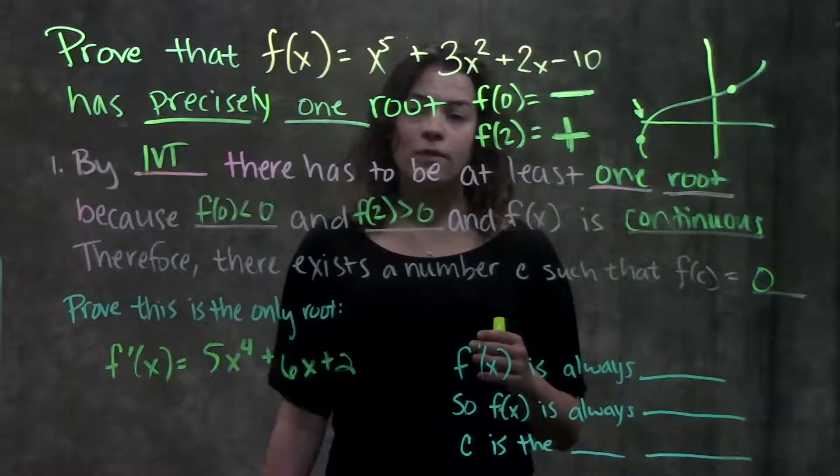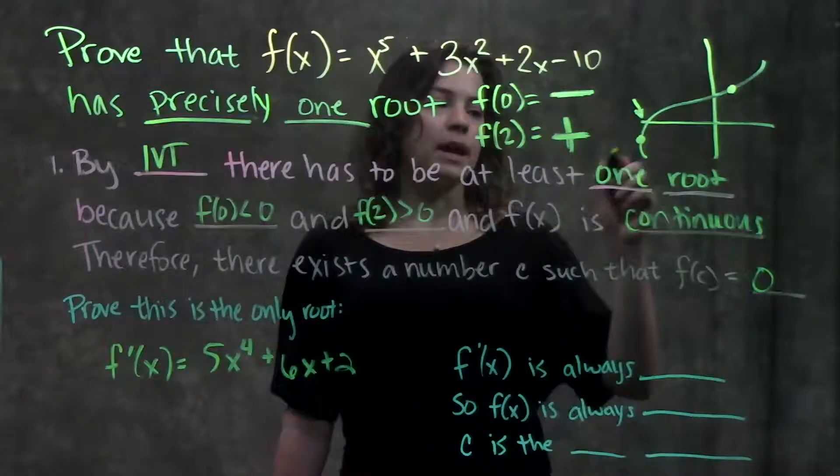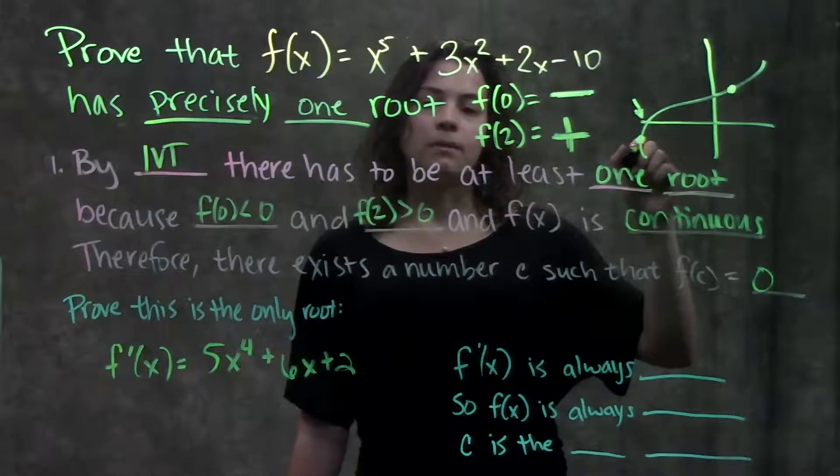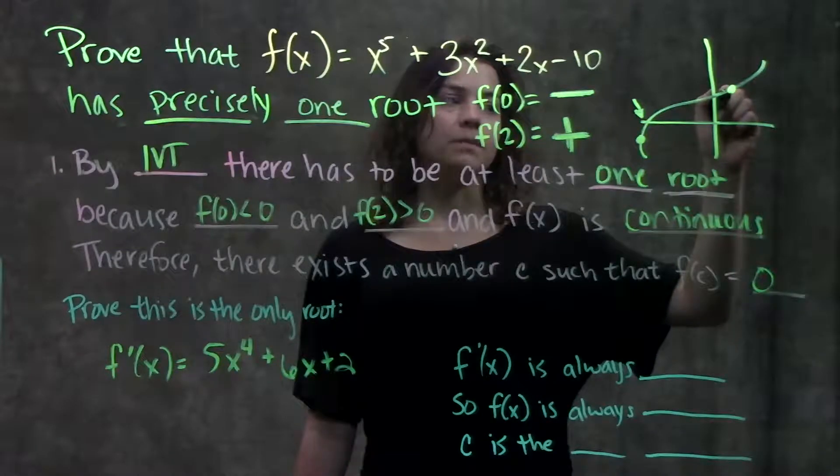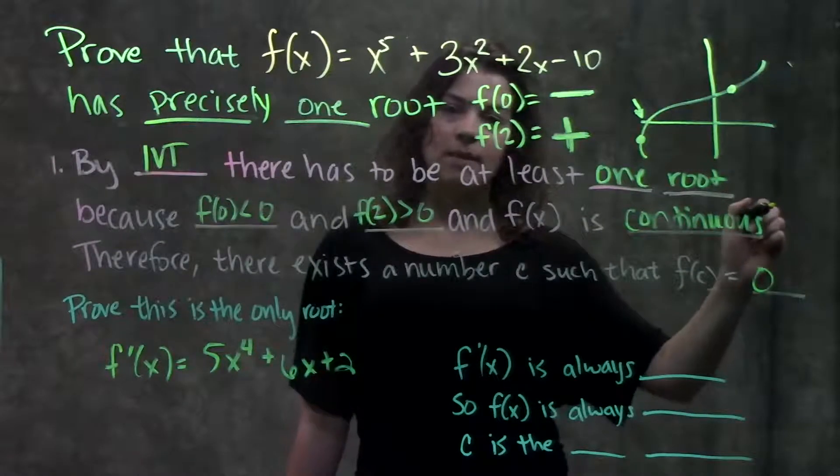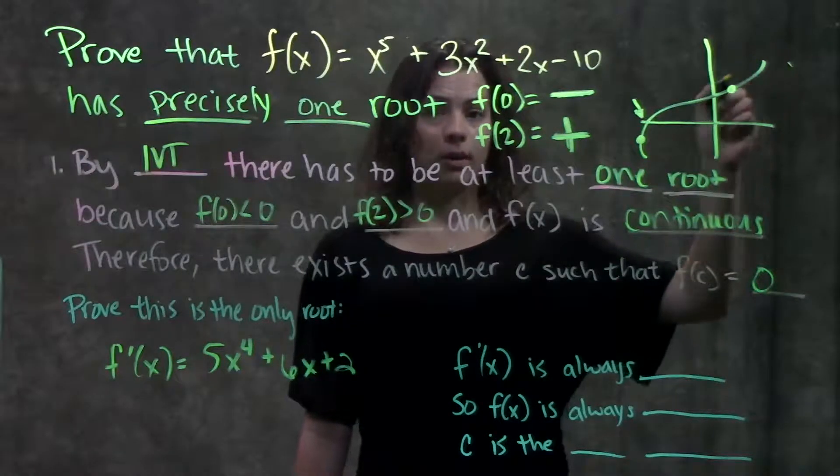The way we're going to prove that this is the only root is by checking the sign of the derivative, because we already know that it's going from some negative to some positive value, but how do we know that after this positive value it doesn't turn around and come back down and touch the x-axis again? How do we know that it keeps on going up?